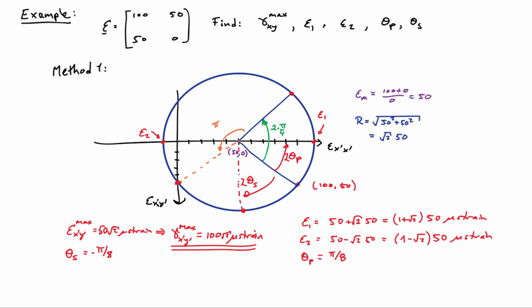If I want, I can also determine the maximum shear strain in the system simply by noting that the maximum shear strain, which happens down here at the bottom of the circle, is equal to the radius of the circle. So that gives me 50 root 2 microstrain. And if I want the engineering maximum shear strain, I need to multiply that by 2, and so that gives me 100 times root 2 microstrain.